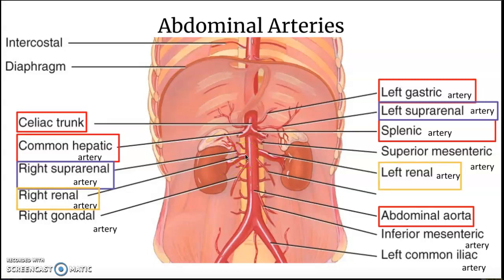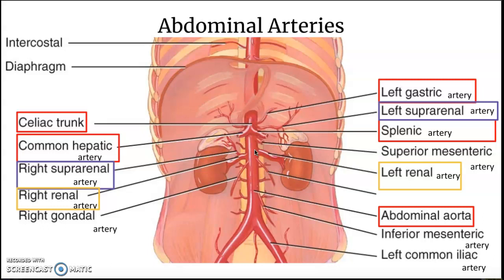That's because the abdominal aorta sits closer to the left side of the body. So it makes more sense for the left suprarenal artery to branch straight off the abdominal aorta, while the right renal artery — being closer — gives way and branches into the right suprarenal. And right here we have the left renal artery directly from the abdominal aorta.